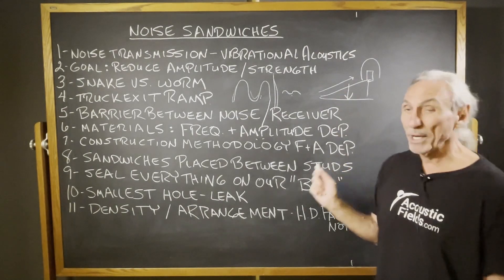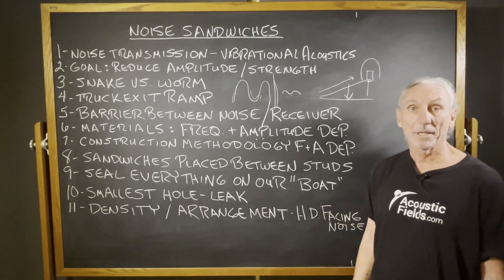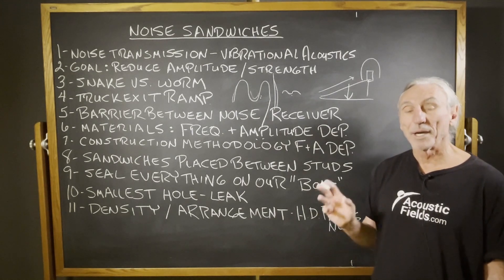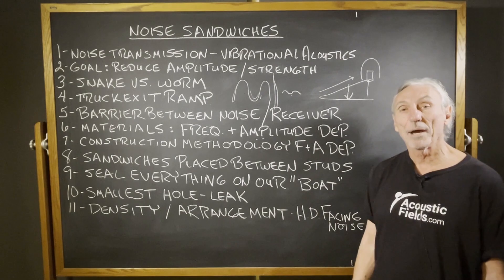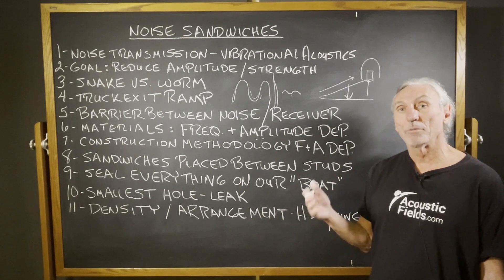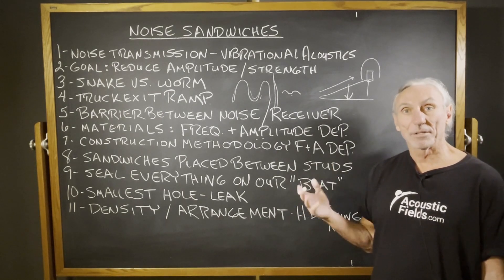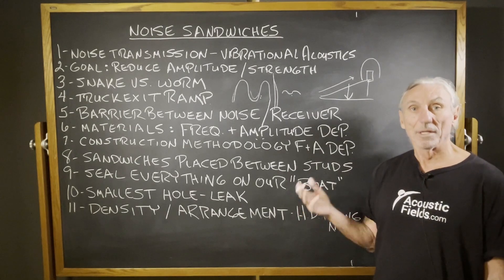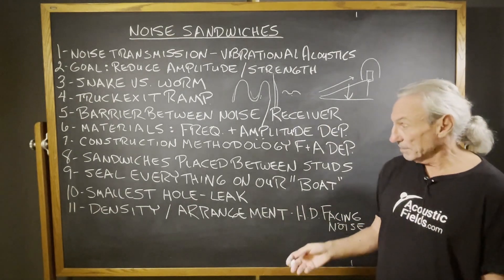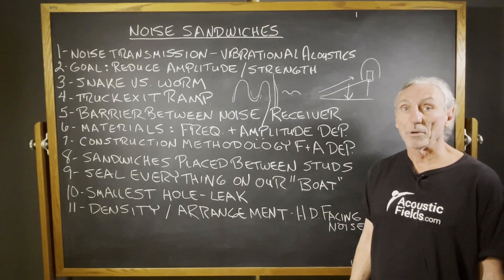Noise sandwiches is a process we've been using for years — very successful. If you have a noise issue, we can definitely help you, but we've got to have noise numbers, measurements. As you can see in the graphics, there are different materials arranged differently — all for different noise situations. It's like going to a tailor and getting a custom suit that fits you perfectly. That's what barrier technology has to do, because if it starts leaking, you've defeated the whole purpose.